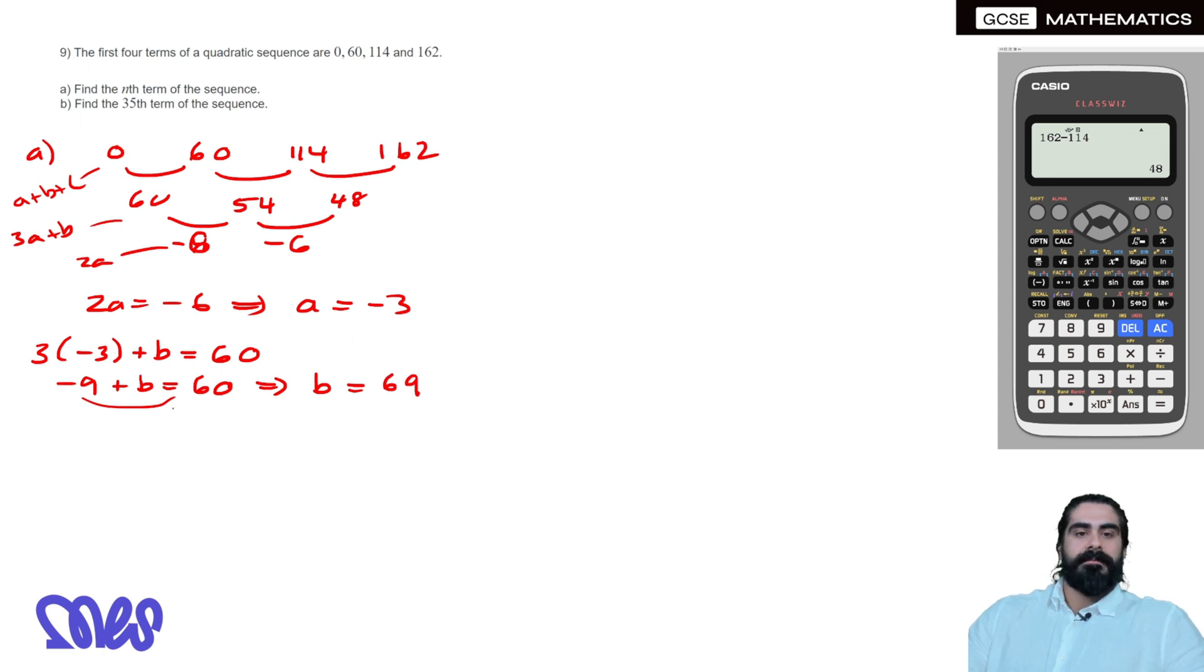Then finally, A plus B plus C equals 0. A is minus 3, plus B is 69, plus C equals 0. Minus 3 plus 69, or 69 minus 3 is 66. So you move the 66 to the other side, you'd get C equals minus 66. So we have A N squared, so minus 3N squared plus BN plus C is our solution then.